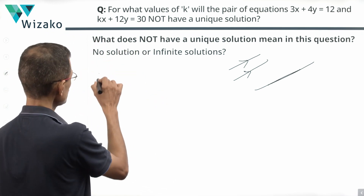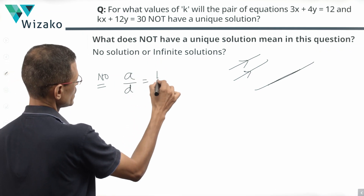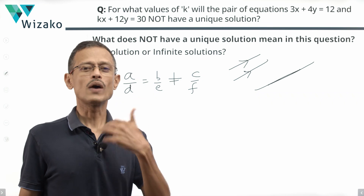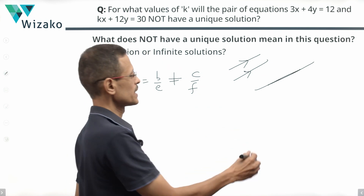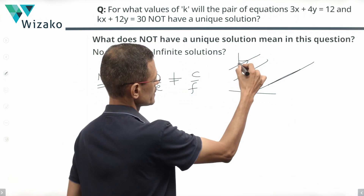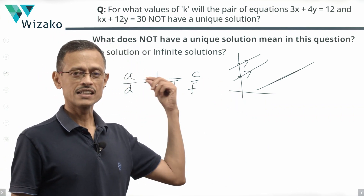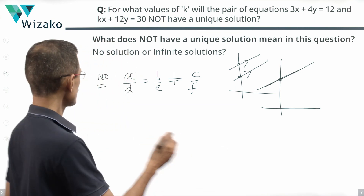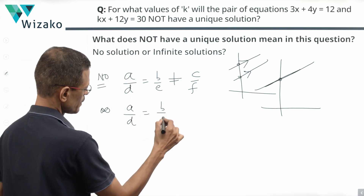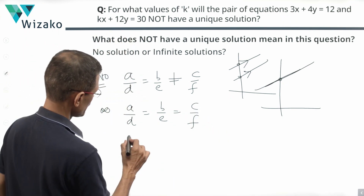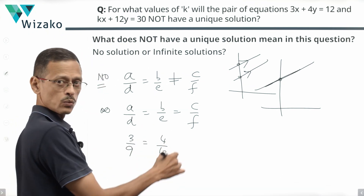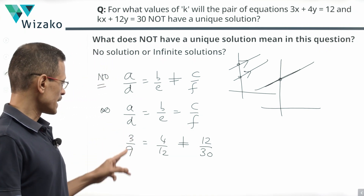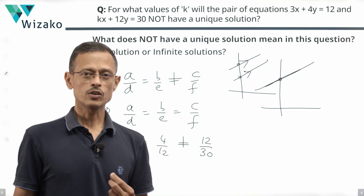It will have no solution when A/D = B/E ≠ C/F — meaning the slopes are equal but the y-intercepts differ, giving parallel lines. It will have infinite solutions when A/D = B/E = C/F — slopes equal and same y-intercept, meaning coincident lines. In our case when k = 9: A/D = 3/9 = 1/3, B/E = 4/12 = 1/3, but C/F = 12/30 = 1/2.5 ≠ 1/3. So A/D = B/E ≠ C/F — this is a no-solution scenario.